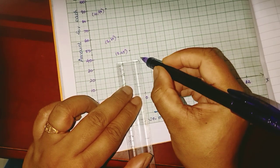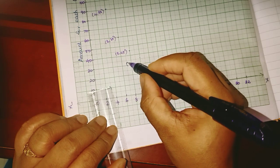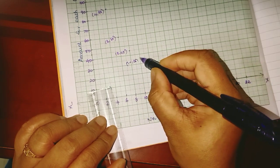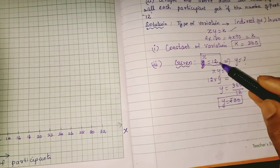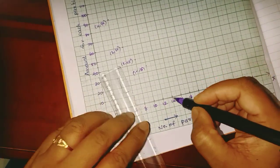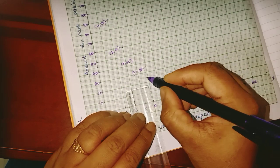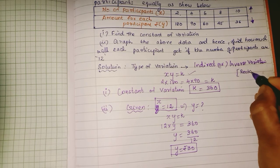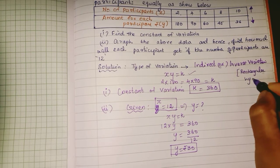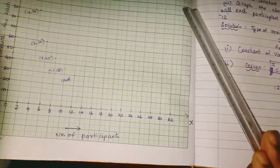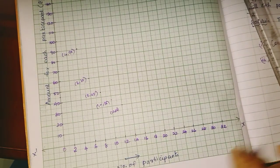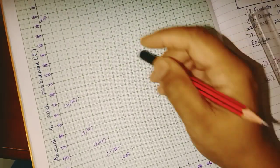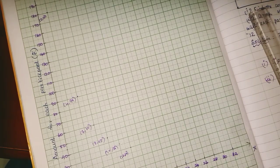Plot the inverse variation graph. Join the plotted points — you have to do this only in pencil. The resulting graph is a rectangular hyperbola. The equation is xy = 360.